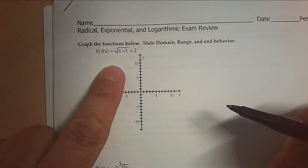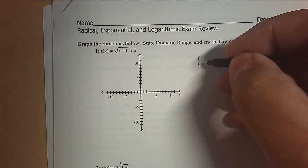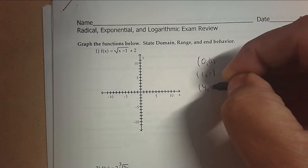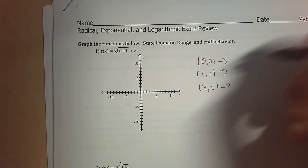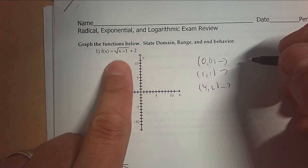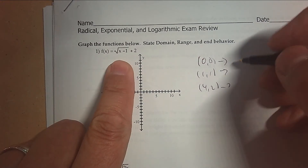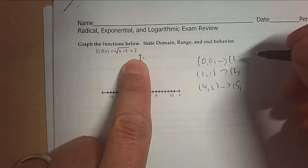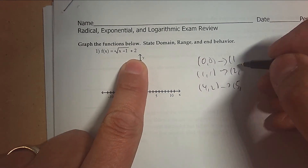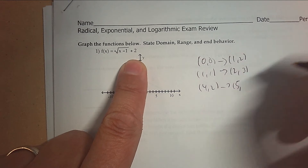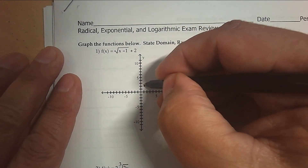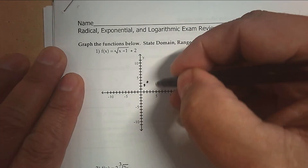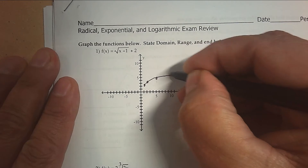Can you graph a square root? Let's start with the parent points for our square root. That's (0, 0), (1, 1), and (4, 2). Underneath the square root sign, we do the inverse of what it says — we're going to add 1 to every x. Outside the square root, that affects the y and it does what it says, so we're going to add 2. Then I'm going to put these on the graph and then make my square root curve.